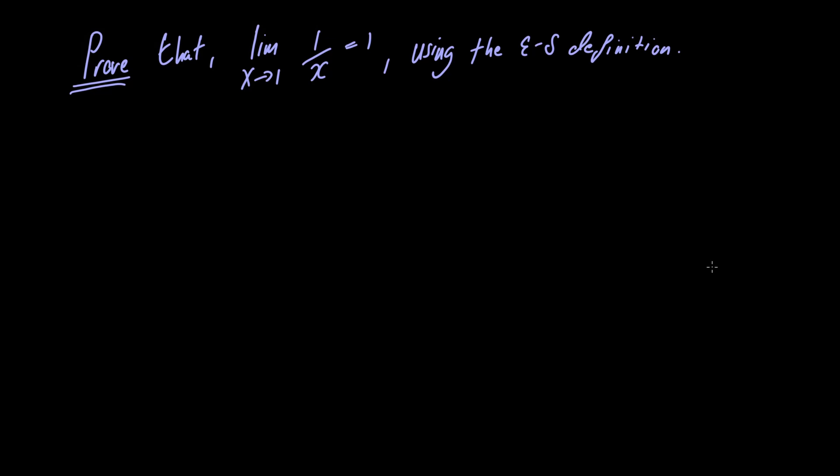Hey everyone. In this video we're going to prove that the limit as x approaches 1 of 1 over x is equal to 1, using the epsilon-delta definition.